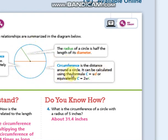It can be calculated using the formula C, which is the length of the circumference, equals pi times D. And because D equals 2R, which is 2 times the radius, so we can replace that.